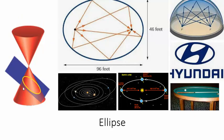If I took that plane and tilted it just a little bit so that it was not parallel with the base of the cone, the intersection would be an ellipse. The plane could be intersecting the top cone as well and you'd still get an ellipse.